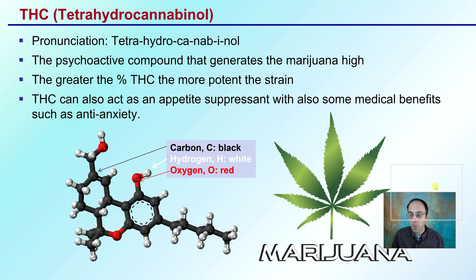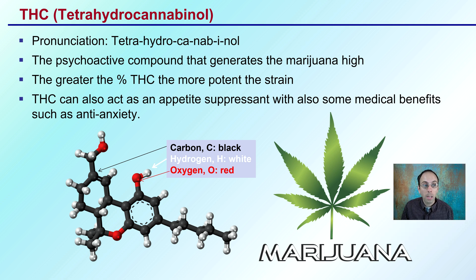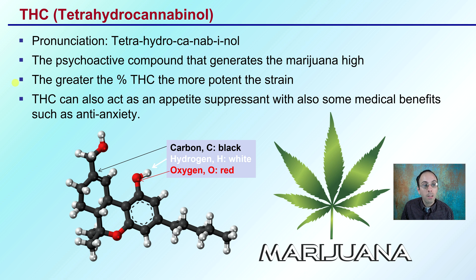Let's start with the first compound, probably the one most people associate with cannabis, and that's THC, or tetrahydrocannabinol. This is the psychoactive compound that generates the marijuana, or typically the high feeling. The greater percent THC, the more potent the strain. THC can also act as an appetite suppressant, with some medical benefits such as anti-anxiety. This is what the chemical structure of tetrahydrocannabinol looks like.